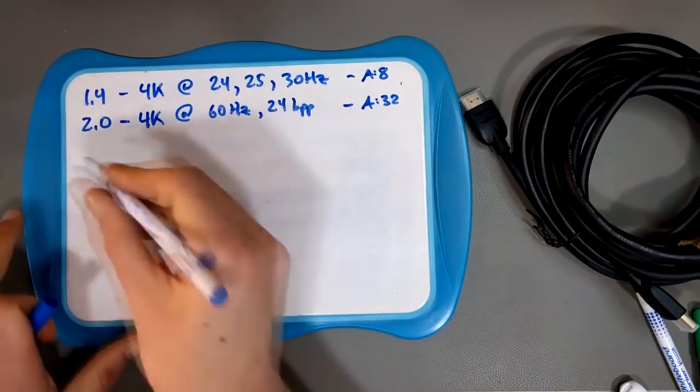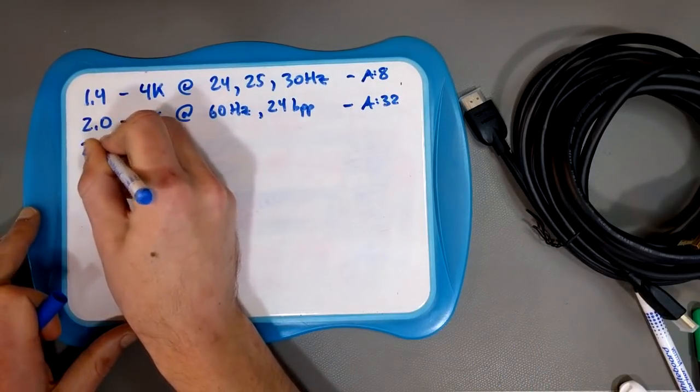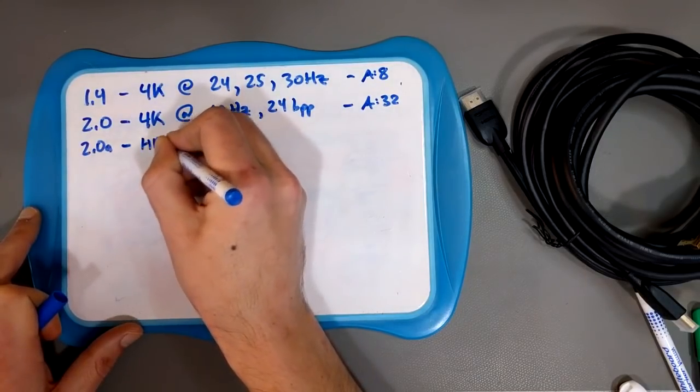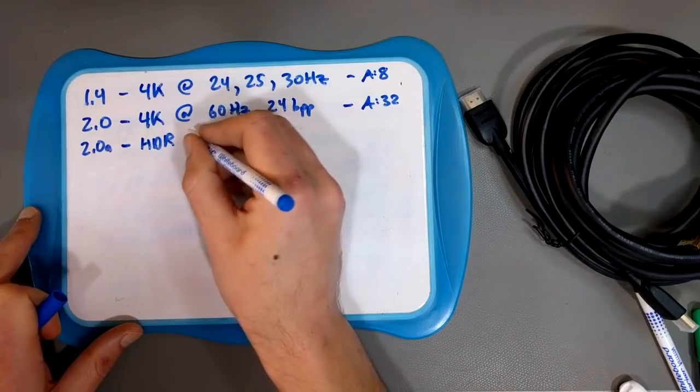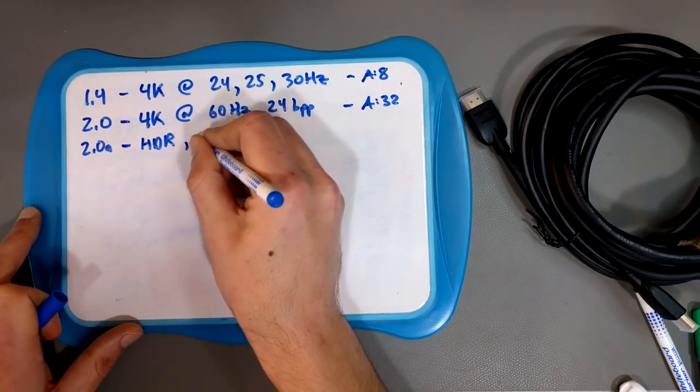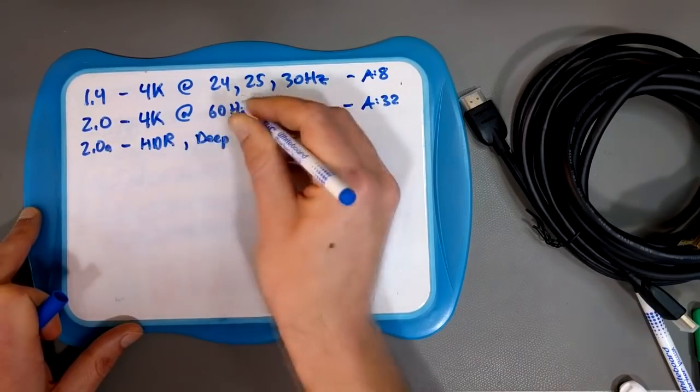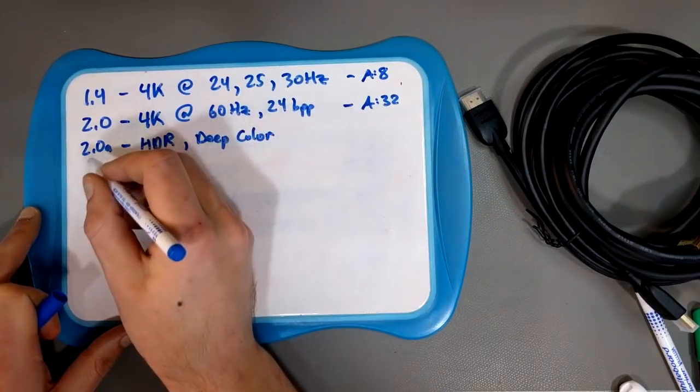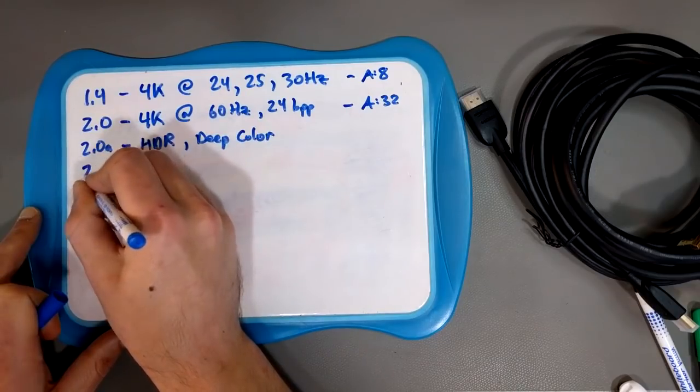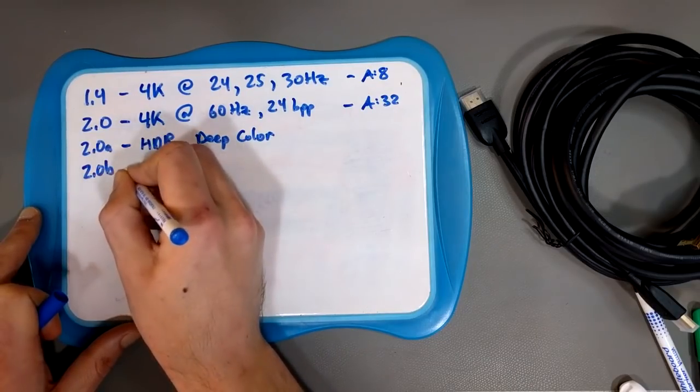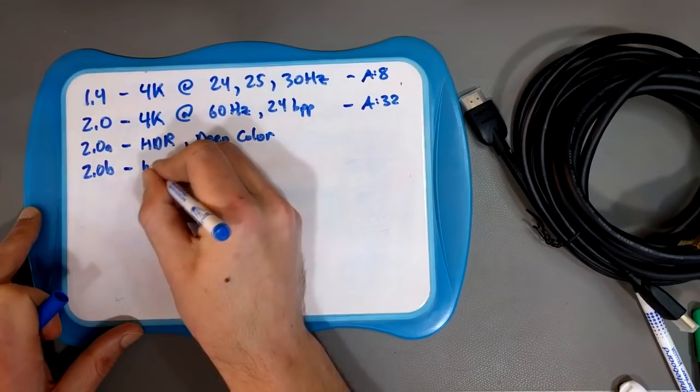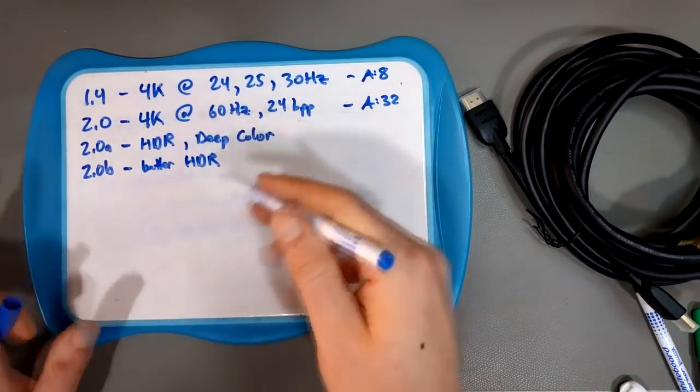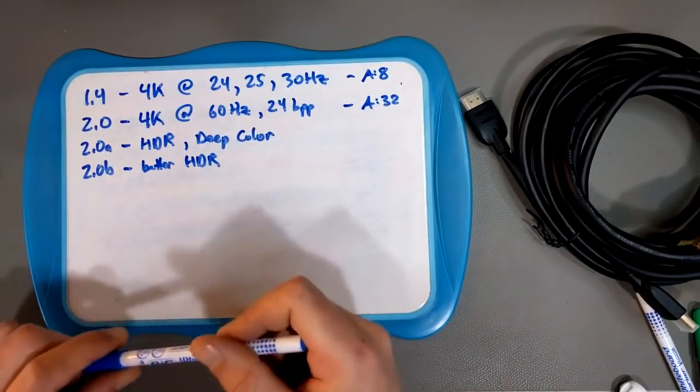So that was in 2013. In 2015, HDMI 2.0A was released. And that added HDR support. And also, more or less full support for deep color. And then, a year later in 2016, HDMI 2.0B was released. And that gave you just basically better HDR. There are a few other things that were added in these various revisions, but this is kind of the stuff that I think is important to know.